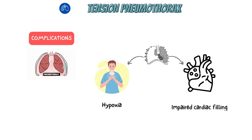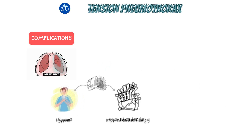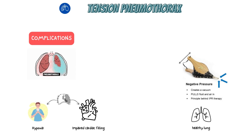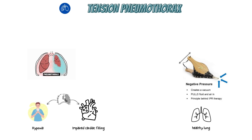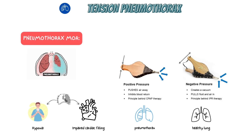You also get impaired cardiac filling. Direct compression of the mediastinum from the huge air collection is going to compress the heart and prevent it from filling normally. Finally, reduced venous return occurs. In healthy physiology, negative intrathoracic pressure causes blood to return from the periphery into the central circulation. If you have a significant amount of high-pressure air in your chest, intrathoracic pressure will be positive, and because there is no longer a pressure gradient to drive blood from the periphery back to the heart, your cardiac output and filling will both be significantly compromised.